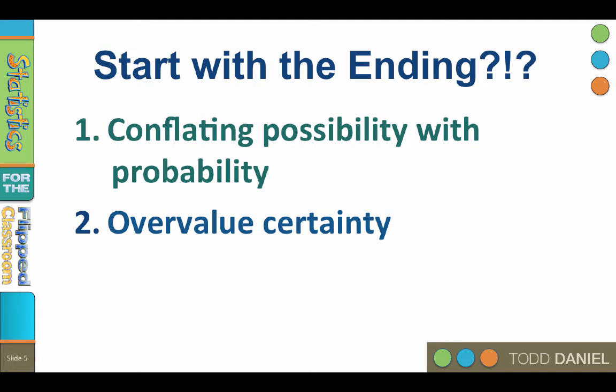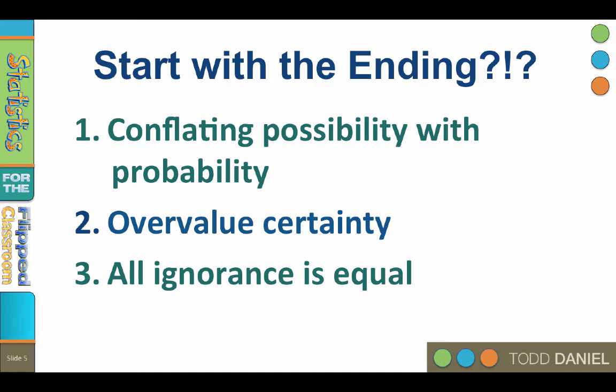Lots of people claim to be certain about what happens to us homo sapiens after we die. But as a critical thinker, you should never accept the certainty of someone who could not possibly know what they claim to be so certain about. The third problem is that all ignorance is treated as equal. The argument from ignorance leaves no way to judge whether other hypotheses are correct or not. If all that is required is a gap in knowledge, then any crackpot supernatural or extraterrestrial explanation is just as good as any other. Once you abandon evidence as your standard for belief, there's no way to choose between competing theories.